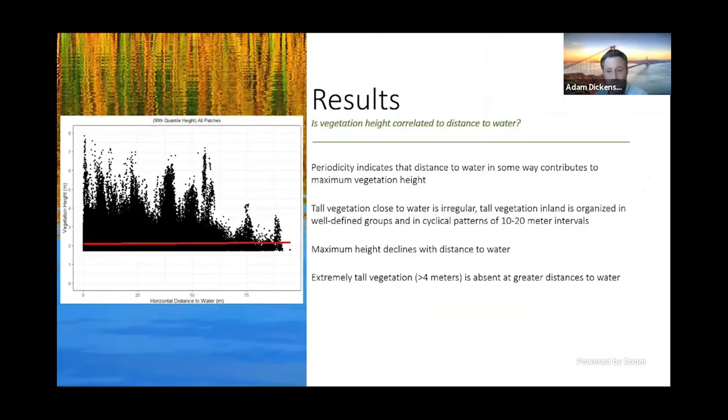So my results. Is vegetation height correlated to distance to water? Here I'm looking at only the maximum vegetation height. Closer to water, vegetation is taller. And as you move inland, the vegetation height generally declines. Also notable, extremely tall vegetation is completely absent at greater distances to water.